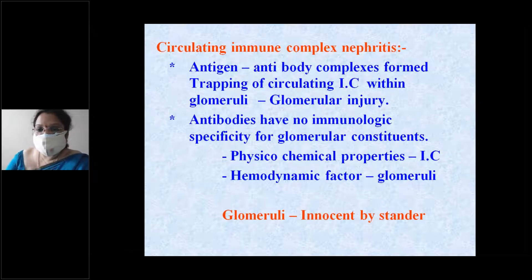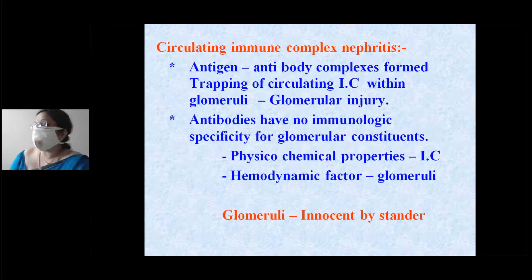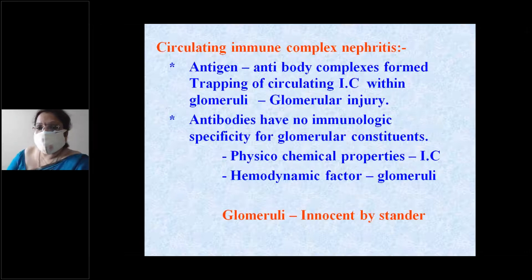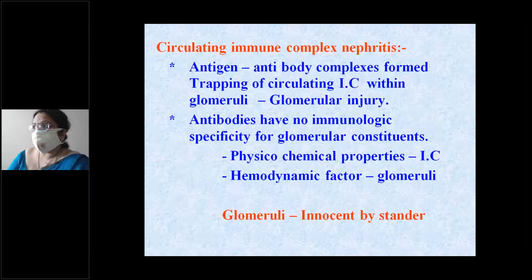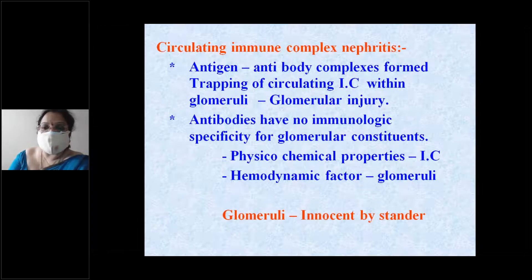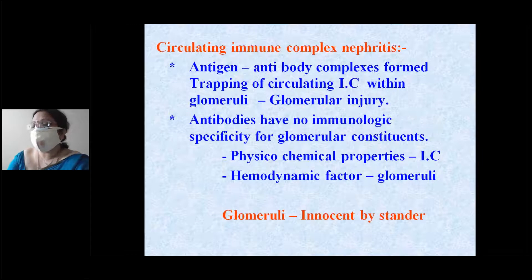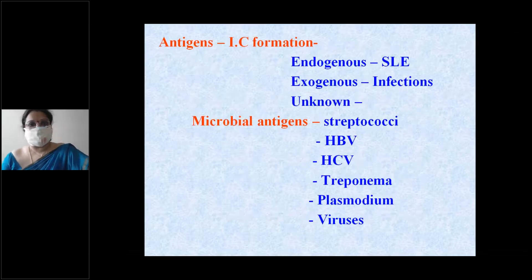The glomerulus is an innocent bystander. There is no specificity for antibodies to deposit on the glomeruli; rather, the physicochemical properties of immune complexes and the glomeruli, along with hemodynamic factors, influence deposition of circulating immune complexes on the basement membrane.